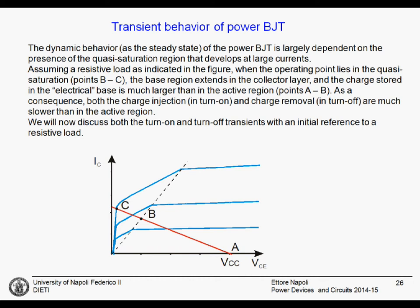Now we move to the transient behavior. This is similar to what we have done for other devices, and we will do this kind of analysis for every device that we study. We want to understand the transient because we studied the ratings and we can understand the power dissipation and the on-state voltage drop. But now, what is the behavior in switching? It is very important to have devices with low power dissipation during switching and the ability to switch quite fast.